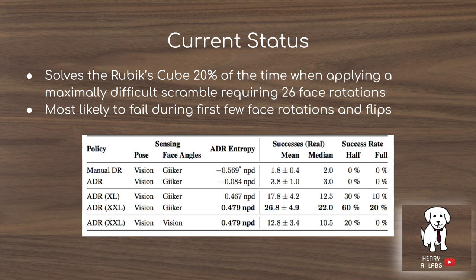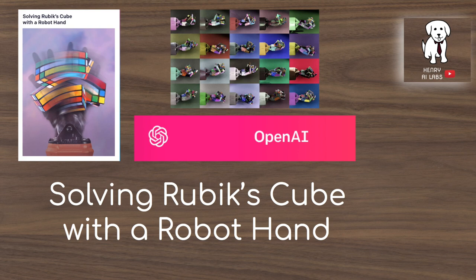The current status of the algorithm is shown in a chart: in the maximally difficult case without the Giiker Rubik's cube providing additional information, it solves the Rubik's cube about 20% of the time, but with the Giiker cube it reaches up to 60%. Thanks for watching this explanation of OpenAI solving a Rubik's cube with a robotic hand. I highly recommend checking out OpenAI's blog post and their full research paper. Please subscribe to Henry AI Labs for more deep learning and AI videos.